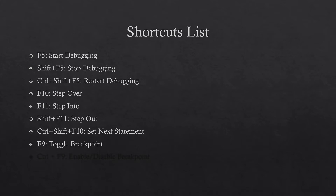The next one is F9. This shortcut will help you place or remove a breakpoint on a line. The next shortcut is Ctrl+F9, which will help you to enable or disable a breakpoint. Now let's get into Visual Studio and see how these shortcuts work.